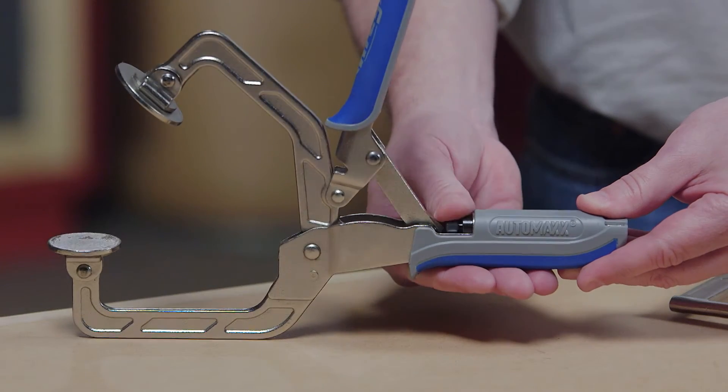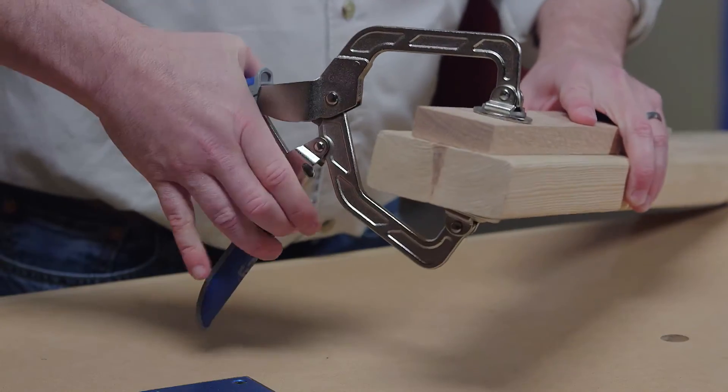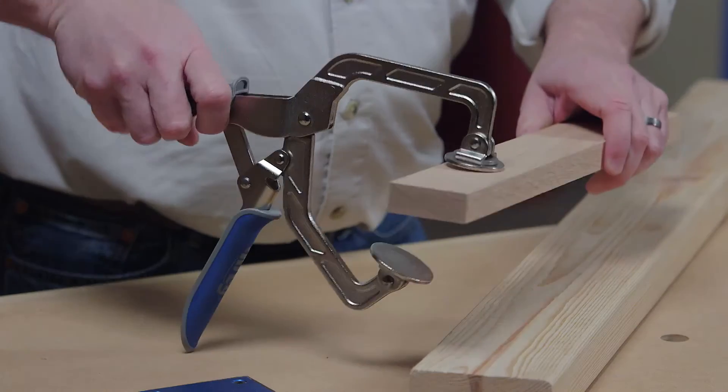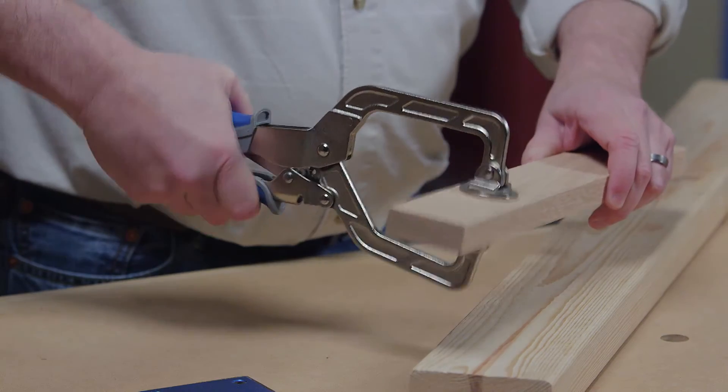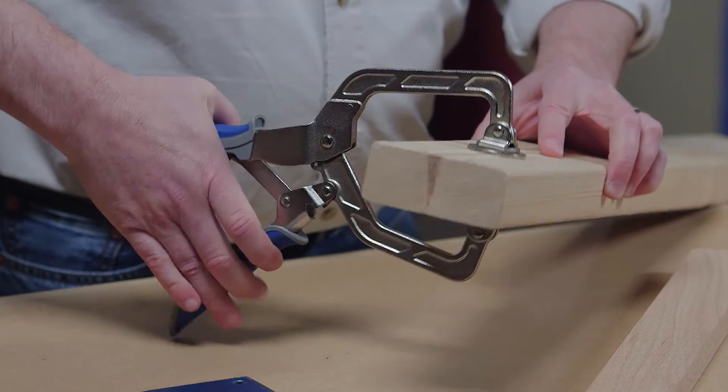A simple thumb screw gives complete control over that clamping pressure. With AutoMax, set the pressure once, and Auto Adjust Technology maintains it every time at every point in the clamp's capacity.